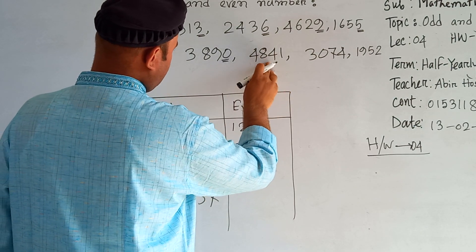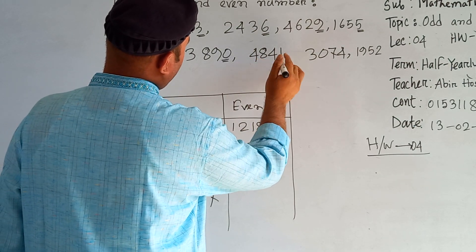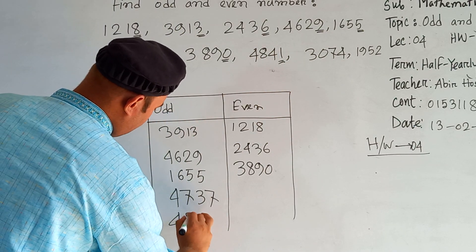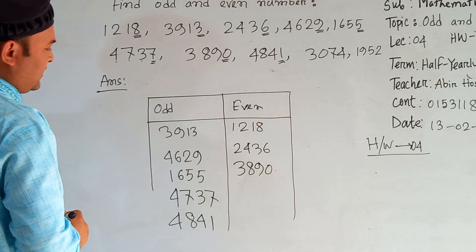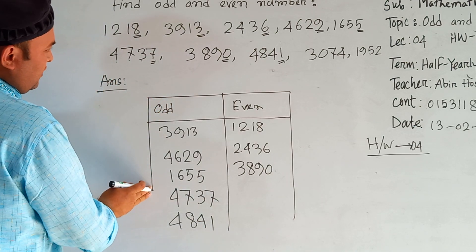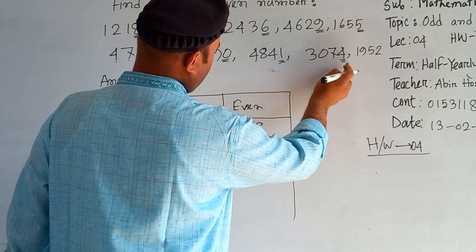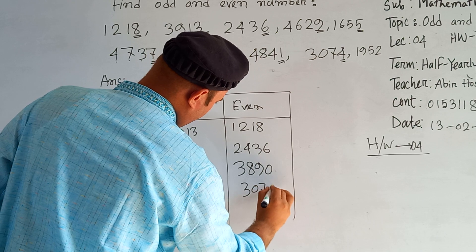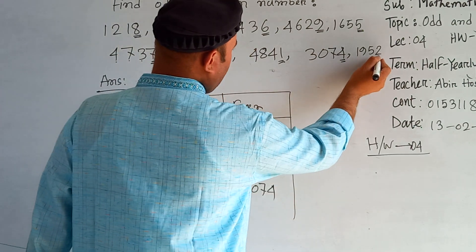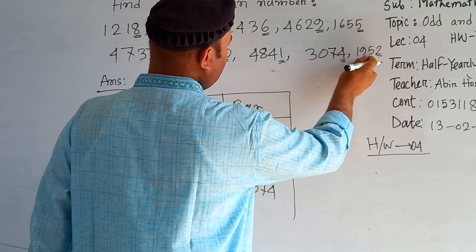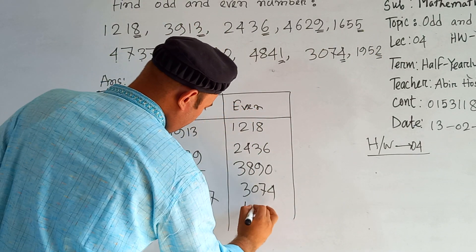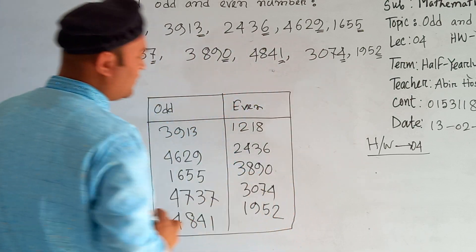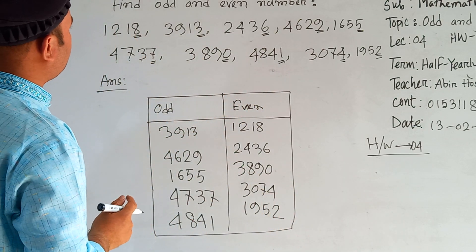Four thousand eight hundred forty-one — one is in the one's place, so 4841 is an odd number. Three thousand seventy-four — four is in the one's place, so 3074 is an even number. And the last one is one thousand nine hundred fifty-two — two is in the one's place, so 1952 is an even number. Hope you understood how we can find odd and even numbers.